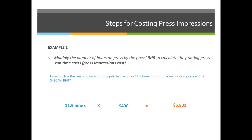Now, this isn't the cost you would bill someone — you would add all of the physical costs in addition to this. We priced out ink previously, so you'd add ink cost, paper cost, binding cost, shipping cost, and all those other things to create the total cost for a job. This $5,831 figure is just for the run portion of the job.